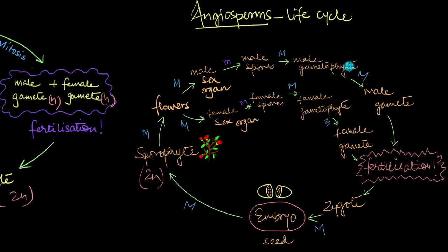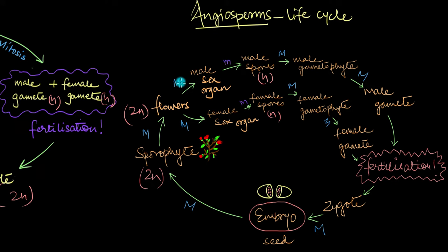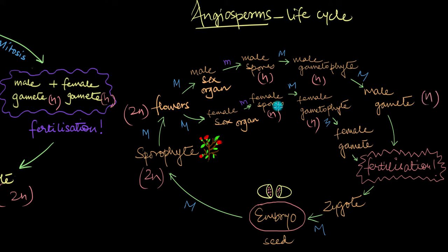In angiosperms, the gametophyte generation takes place inside the diploid flowers, which are borne on the diploid sporophyte — so the flowers are also diploid. These flowers have sex organs which produce haploid spores via meiosis. The male sex organ produces haploid male spores, which develop into the male gametophyte with the male gamete.